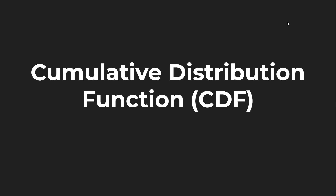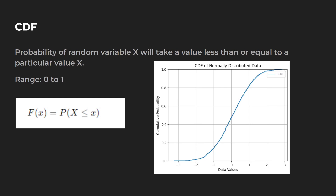Before we get coding in Python, I want to go over a little bit more information about the cumulative distribution function. So what it tells you is the probability that a random variable X will take a value less than or equal to a particular value of X.